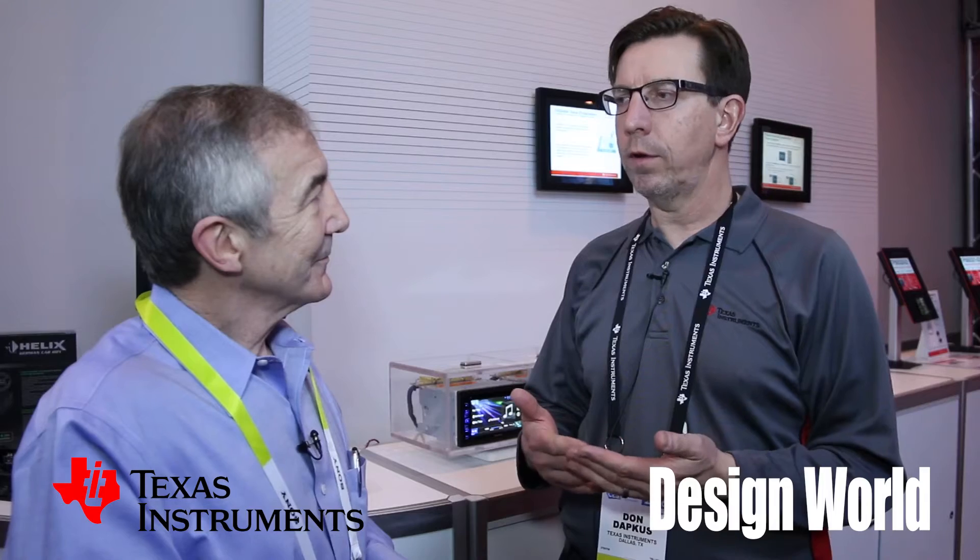The previous generation products were all Class AB, and they had a continuous output which resulted in high current and high voltage at the same time. So when you multiply current times voltage, you get a lot of power dissipation. With our PWM output, we're either all the way on or all the way off, so we never have a condition where we have high voltage and high current at the same time.